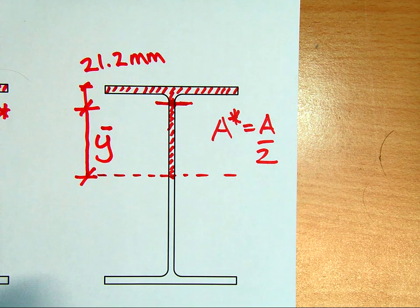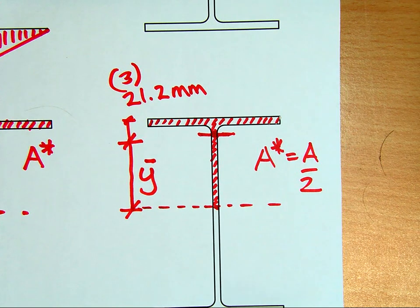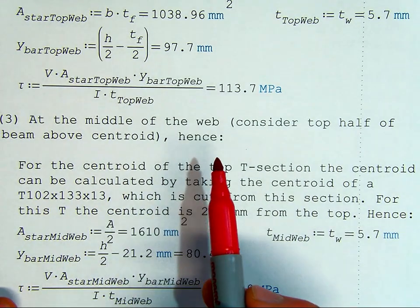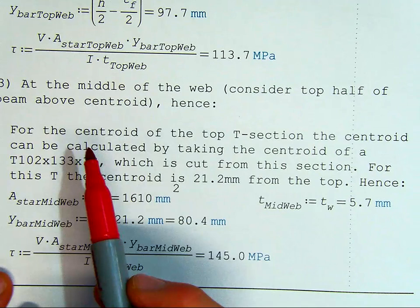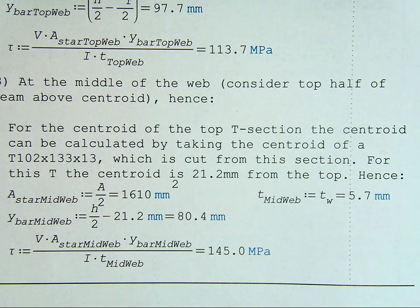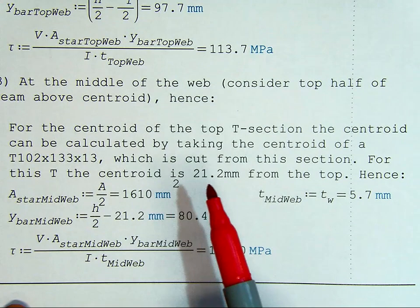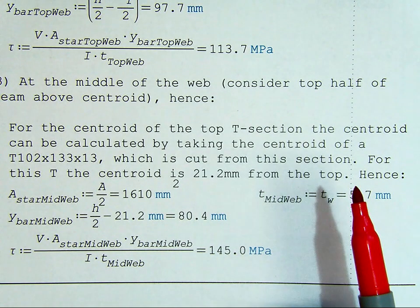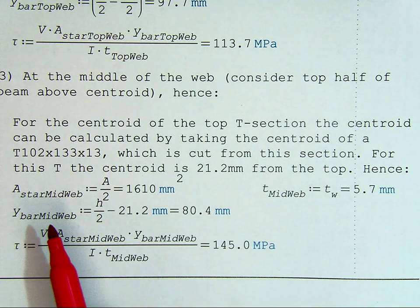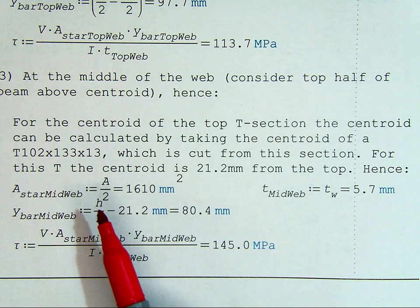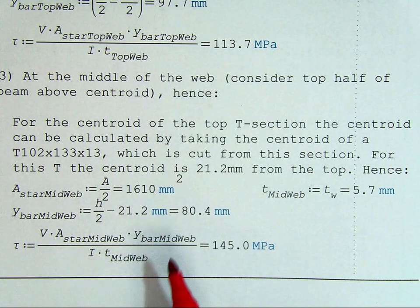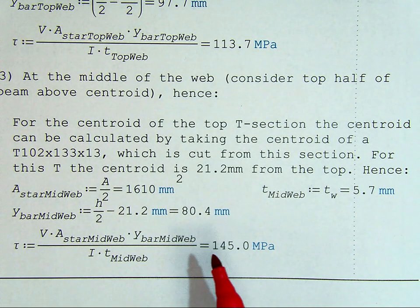And so, now coming to the calcs. And this is then the third part of our calculation, the third position. At the middle of the web, consider top half of beam above centroid. Hence, for the centroid of the top T section, the centroid shall be calculated by taking the centroid of the 203, 133, 13, which is cut from the section. For this T section, the centroid is 21.2 mils from the top. Hence, our area now is just half the total. Our thickness is the web thickness as before. And our Y bar, the distance from the centroid of the entire section to the centroid of our section, is just H over 2 minus the distance we just showed you. And now we can work out our stress based on that, which is a value of 145 MPa.